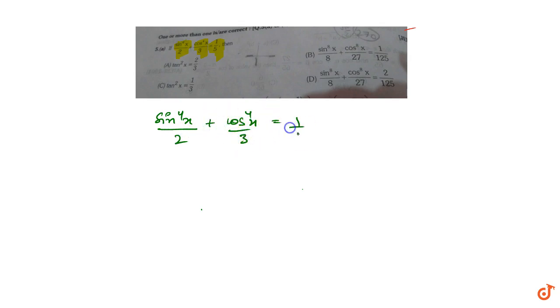We are given that sin⁴x/2 + cos⁴x/3 = 1/5, and we have to tell which option is correct. So we take 3·sin⁴x + 2·cos⁴x and multiply both sides by 6/5.